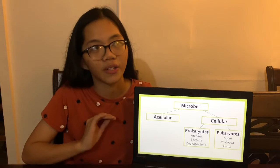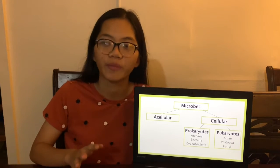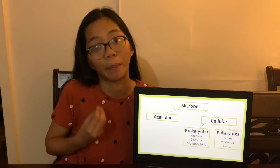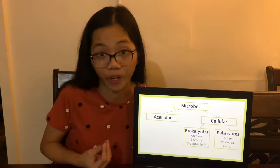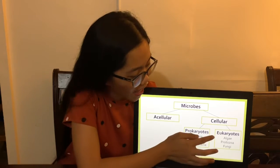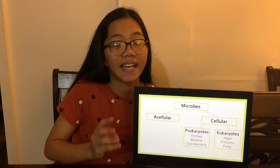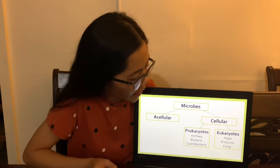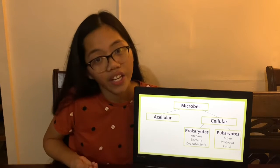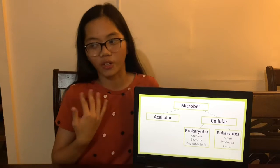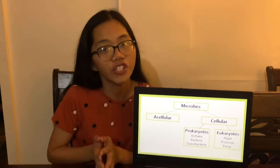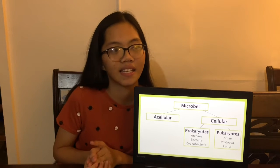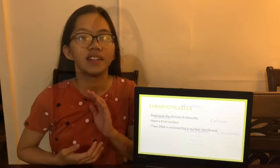There are good bacteria and bad bacteria — bacteria that can be in our body or that already live in our body. Next we have eukaryotes. Eukaryotes have a true nucleus and are composed of algae, protozoa, and fungi. For example, fungi can be seen in mushrooms, and algae are also eukaryotes.